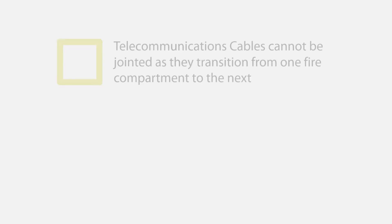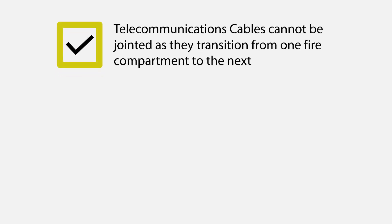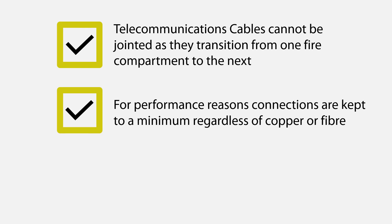Once more for further clarity, unlike electrical cables, with telecommunications cables, connections or joints must be kept to a minimum as each one will introduce an unwelcome signal loss. Therefore, telecommunications cables must be of the same Euro class as they transition between fire compartments. Also, consider what the evacuation route or space means — it is effectively any space within a building that a human can occupy.